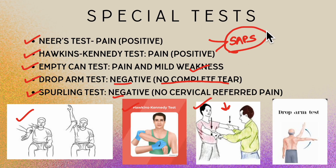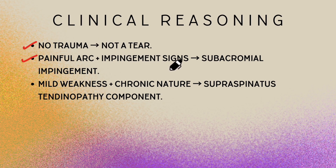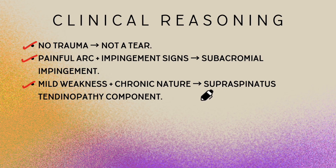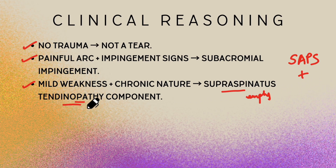Now we need to integrate all findings together for a final diagnosis. Clinically reasoning this: there was no trauma, so there's less chance of a tear. The painful arc sign was positive along with other impingement signs, pointing to subacromial pain syndrome. There was mild weakness and a chronic nature, pointing to supraspinatus tendinopathy — which is why the empty can test was positive. So along with subacromial pain syndrome, there is also a supraspinatus tendinopathy component.